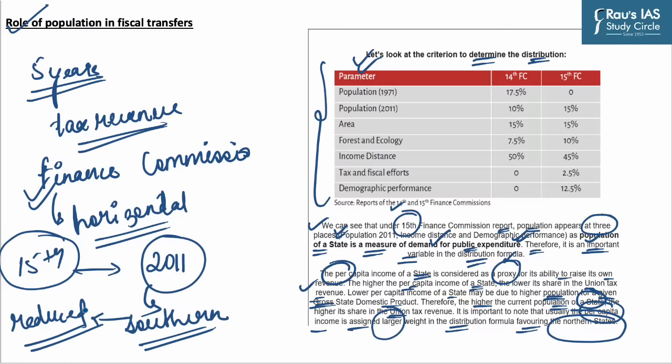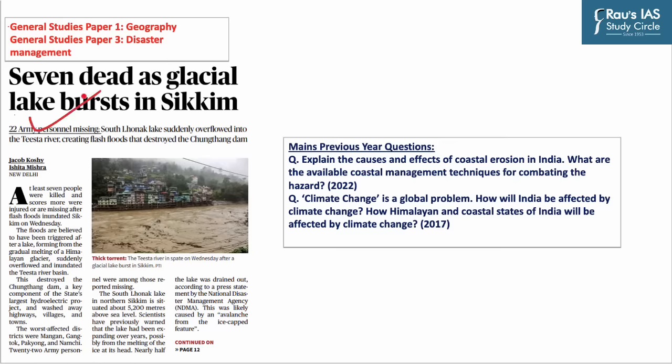With this, we will be ending the discussion on this topic. The third topic of today's session is based on a news article from page one of The Hindu. A glacier lake burst in Sikkim led to the death of seven people.